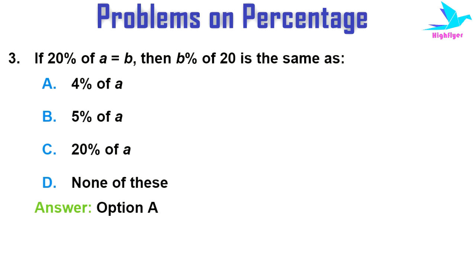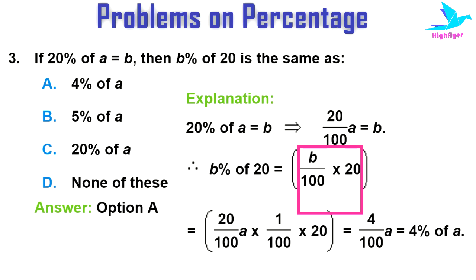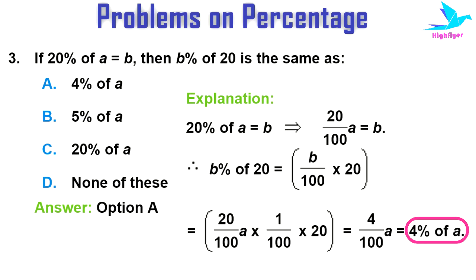Next question: if 20 percent of A equals B, then B percent of 20 is the same as — options are: 4 percent of A, 5 percent of A, 20 percent of A, or none of these. The answer is option A: 4 percent of A. As 20 percent of A equals B, that implies 20/100 into A equals B. Then B percent of 20 equals B/100 into 20. Replacing B with 20/100 into A, we get 20/100 into A into 1/100 into 20, which equals 4/100 into A, that is 4 percent of A.